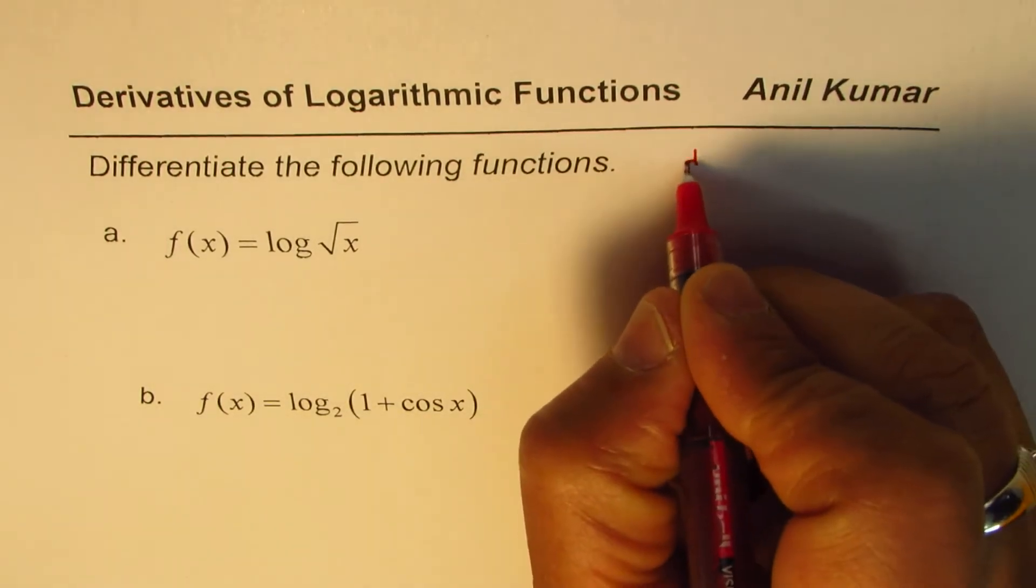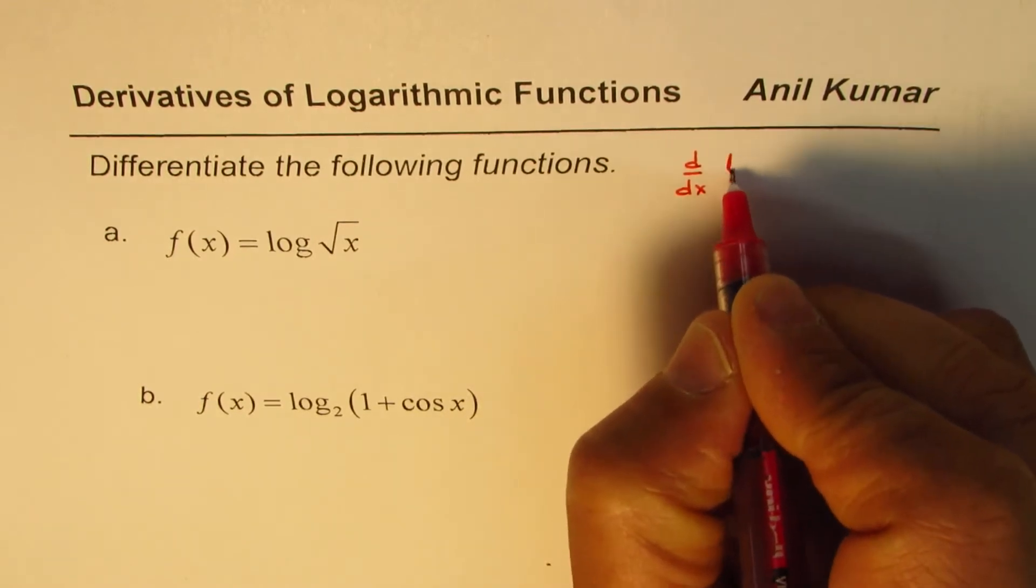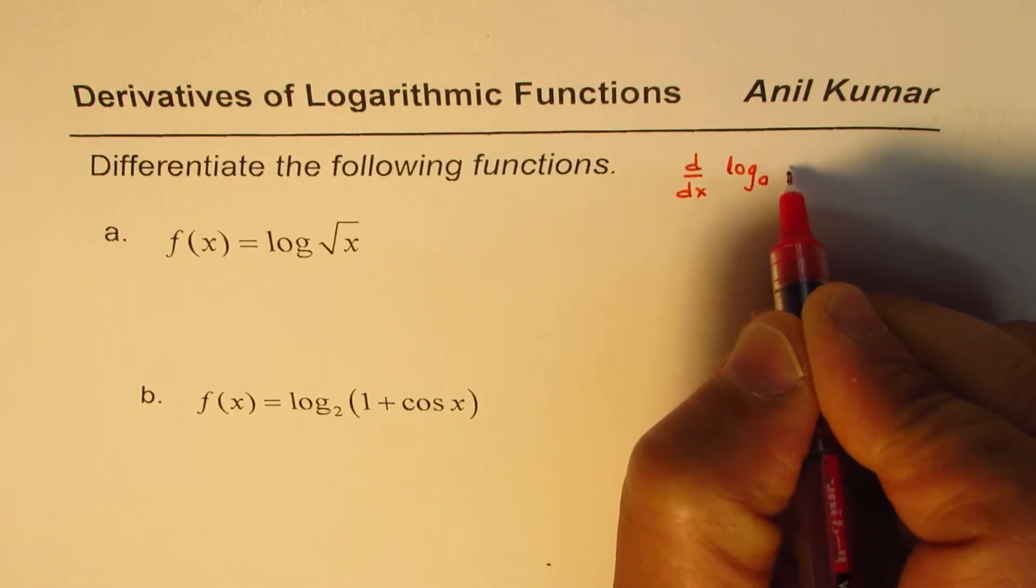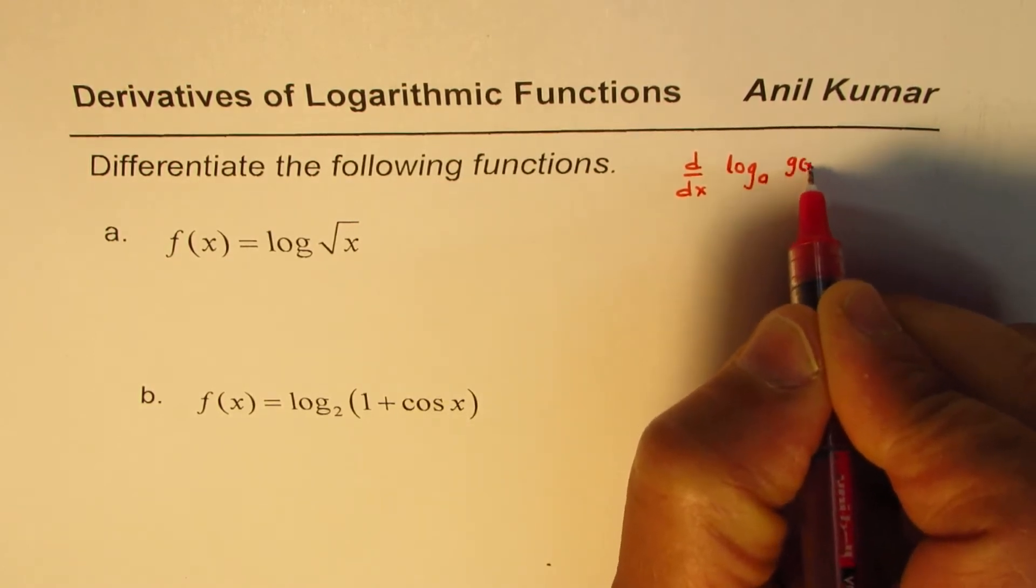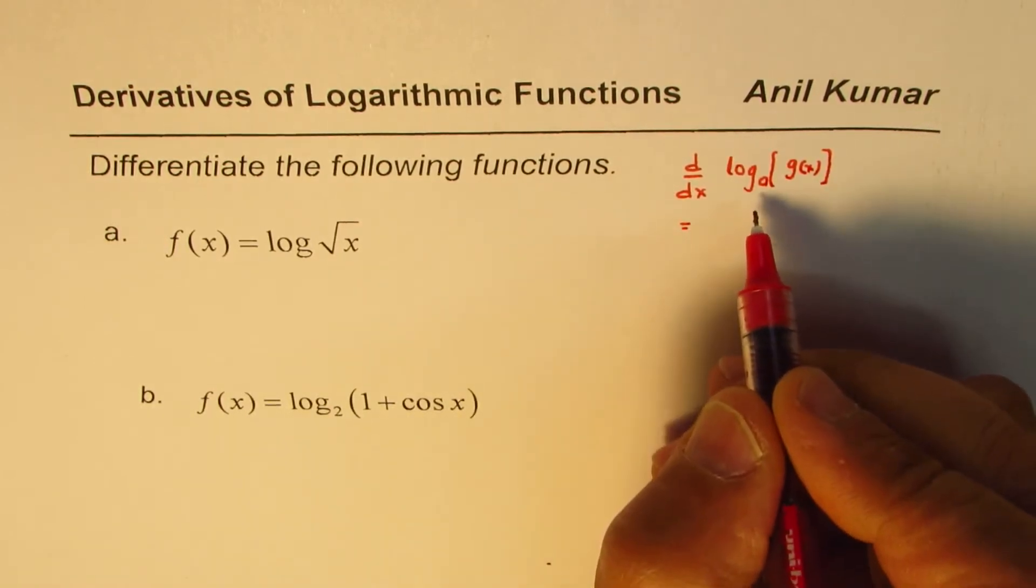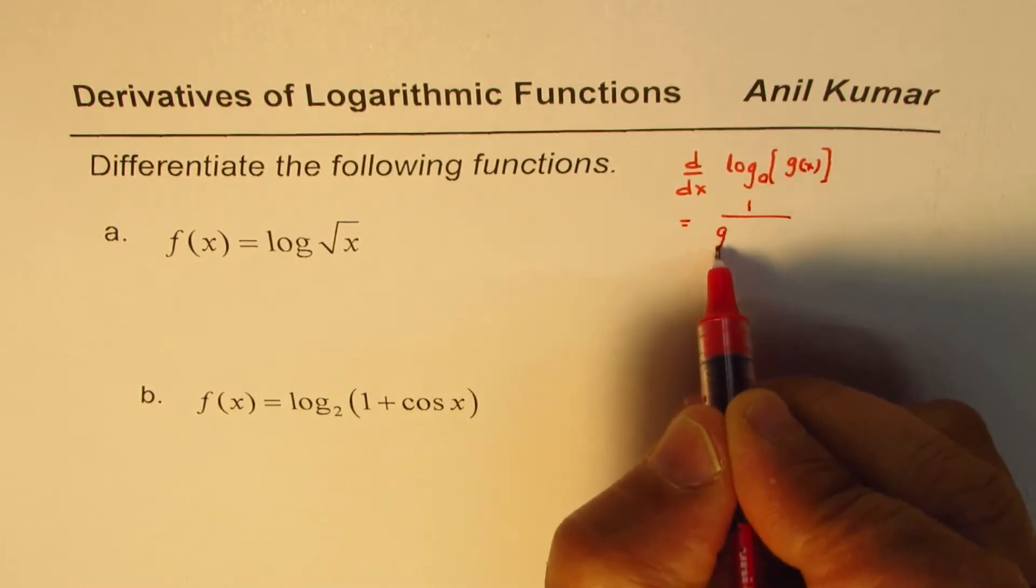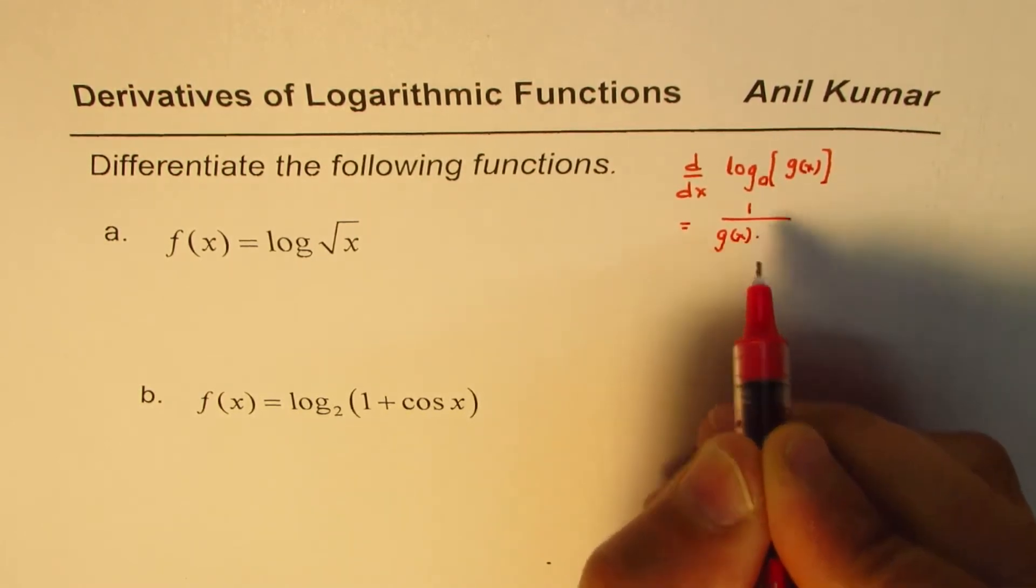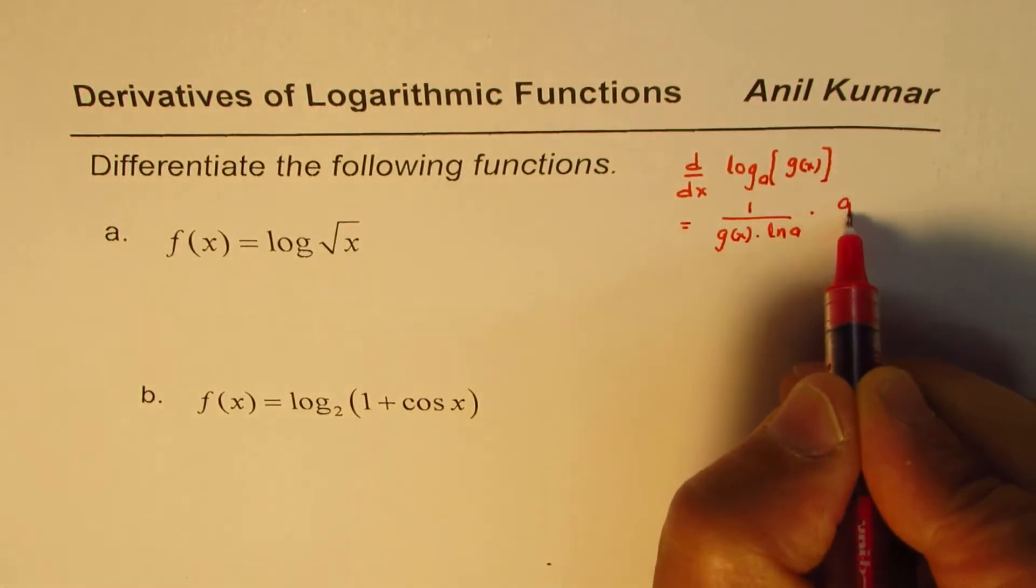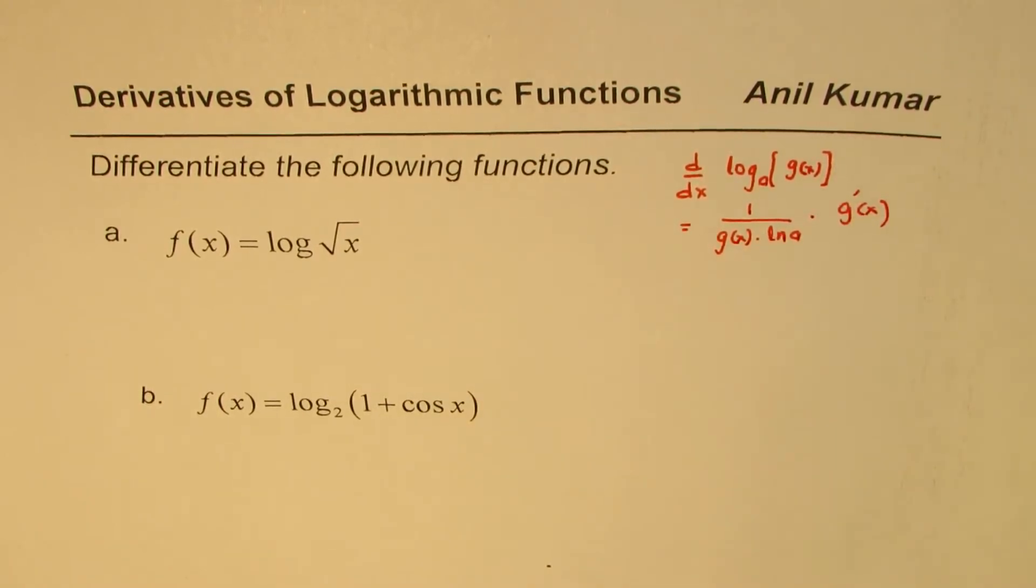As you know, derivative of log to the base a of x, let me write g(x), is what? The derivative of this is 1 over g(x) times ln a times derivative of inside function g'(x). So that is the rule which can help you find these derivatives.